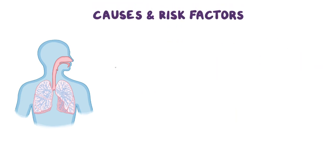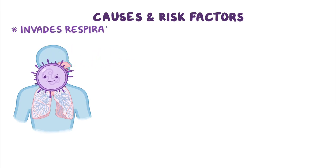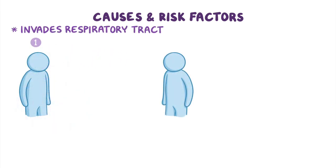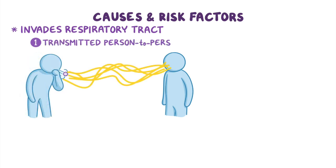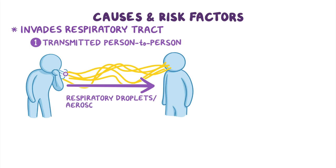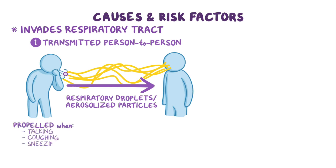The influenza virus invades the respiratory tract and uses it to spread the infection. The flu is typically transmitted from person to person via respiratory droplets, or in some instances, aerosolized particles that are expelled from the respiratory tract of an infected individual. These droplets can be propelled a few feet into the air when talking, coughing, or sneezing, and can then land in the eyes, nose, or mouths of people nearby, or get inhaled into the lungs.